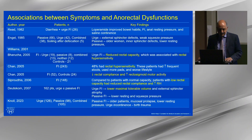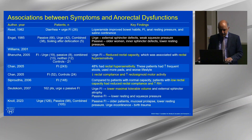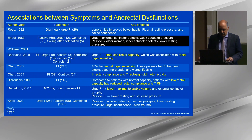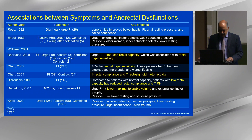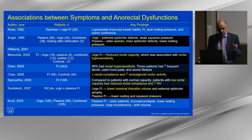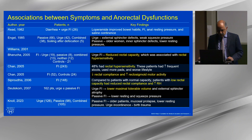This slide summarizes the key studies that evaluated the relationship between phenotypes and anorectal dysfunctions. In general, urge is associated with external sphincter dysfunction. Passive, as you might anticipate, because the internal sphincter is weak, is associated with internal sphincter dysfunction. Various studies have shown, with some minor variations, that urge fecal incontinence is associated with a smaller rectal reservoir, often with reduced rectal compliance and rectal hypersensitivity, whereas passive fecal incontinence is associated with a lower resting and squeeze pressure.